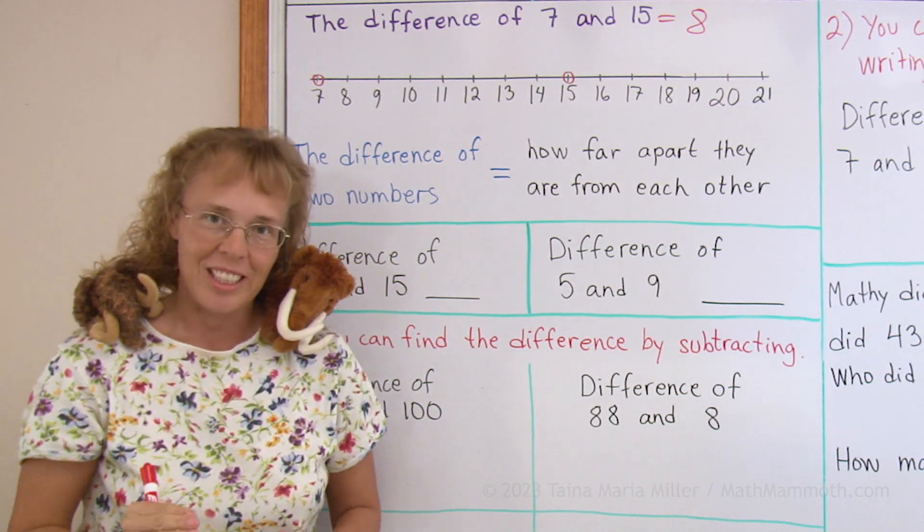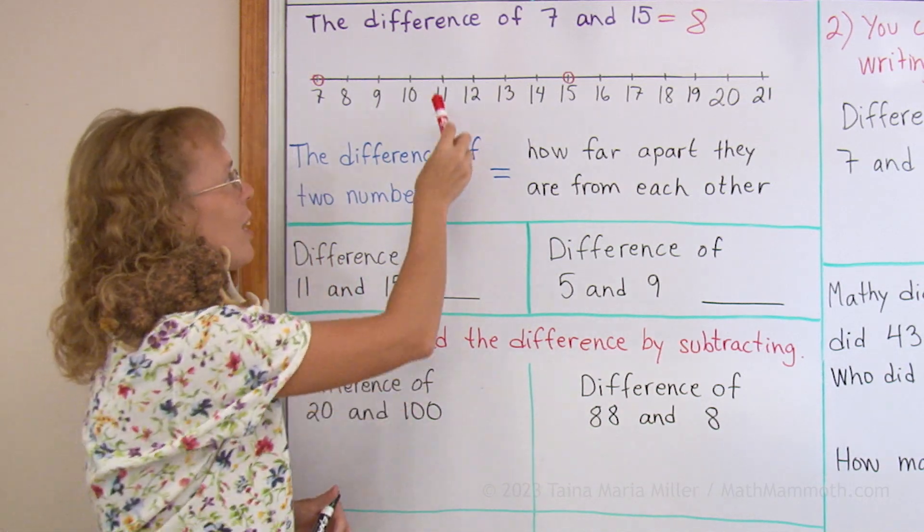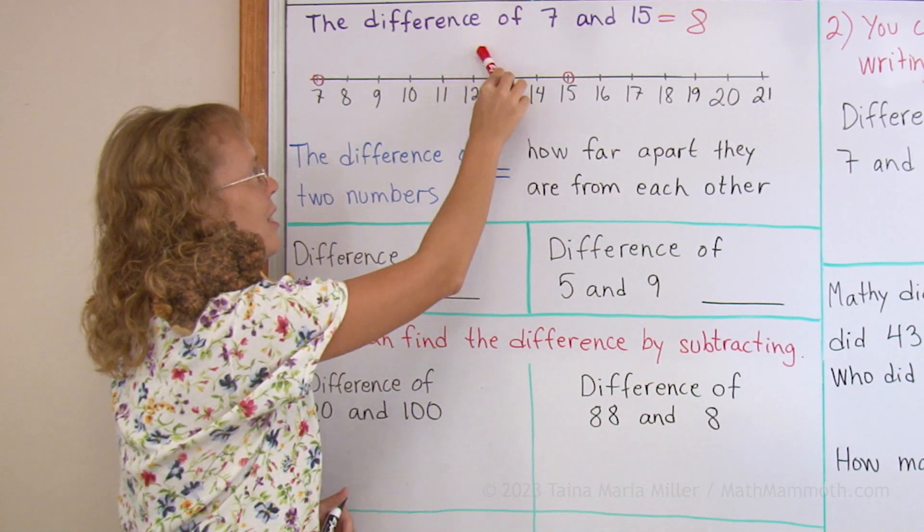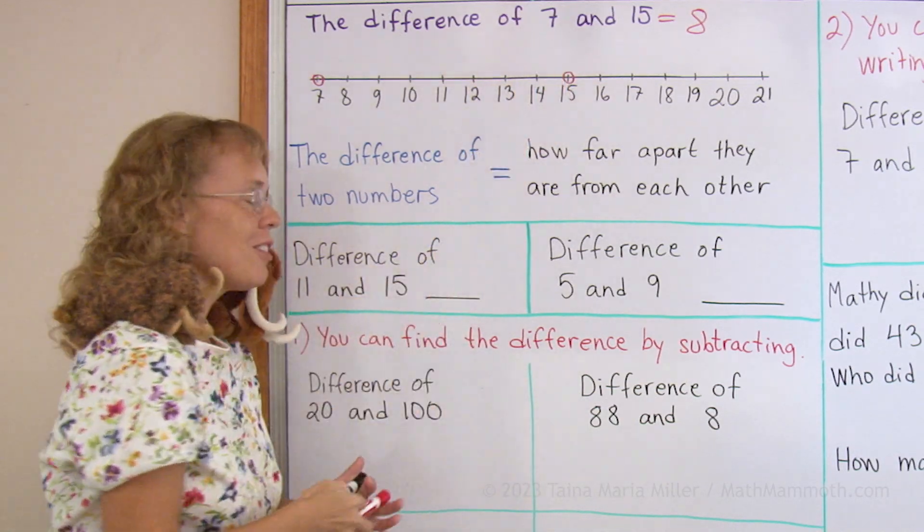Difference of 11 and 15. Again, I can go on the number line, 11, 15, 1, 2, 3 and 4. So that would be 4.